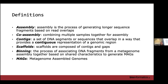Once we have contigs, we typically bin them — this is the process of associating DNA fragments from a metagenome assembly together based on shared characteristics to generate MAGs. MAGs are our final product: metagenome-assembled genomes. Typically after binning, we will have to do some kind of manual refinement, because what was computationally placed together doesn't always make sense when we look at it.